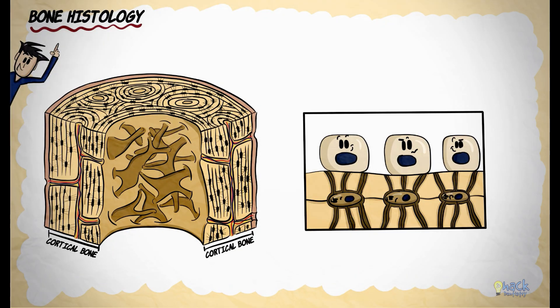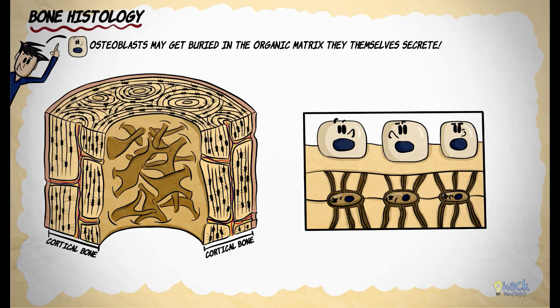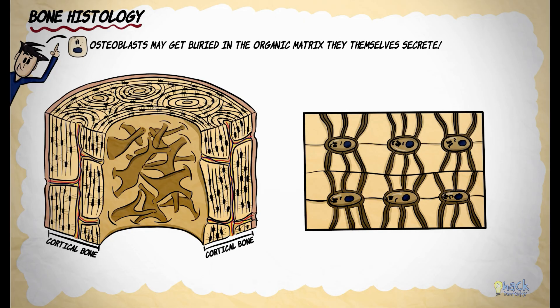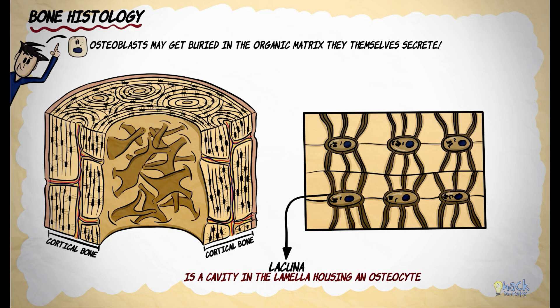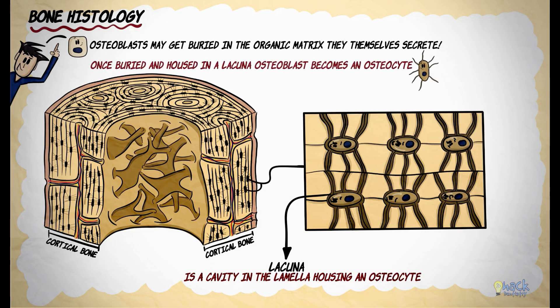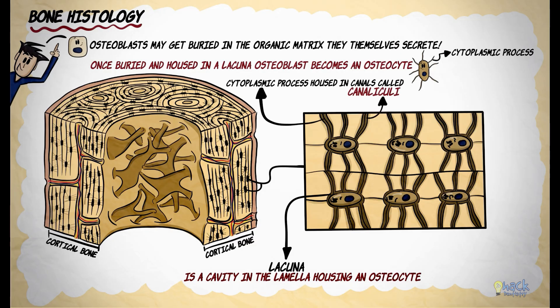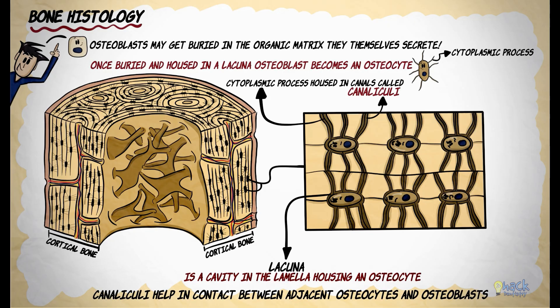During bone formation, when the organic matrix is laid down by osteoblasts, they often get buried within the lamellae and are housed in small cavities called lacunae. These osteoblasts housed in lacunae are then called osteocytes, and they have delicate cytoplasmic processes radiating out that are housed in microcanals called canaliculae. These canaliculae are interconnecting and help osteocytes contact adjacent osteocytes as well as the osteoblasts lining the bone surface.